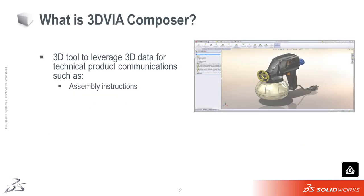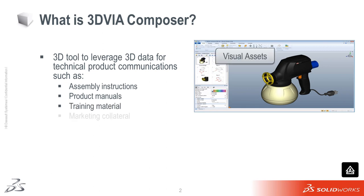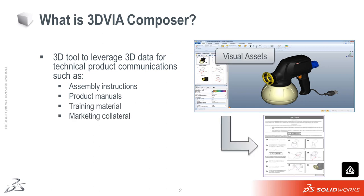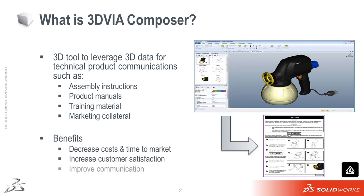3D Via Composer is a 3D tool that allows non-CAD users to repurpose 3D CAD data to create 2D and 3D content for technical communications, such as assembly instructions, product manuals, marketing collateral, and training material. Adding a new dimension to product communications, 3D Via Composer software helps product development organizations and manufacturers cut costs, save time, and grow their competitive advantage.